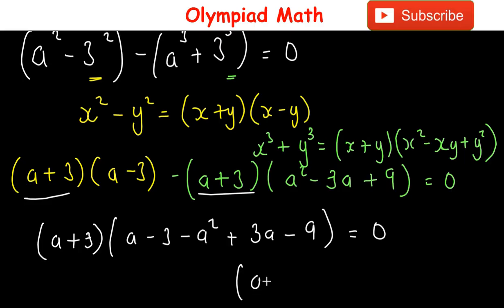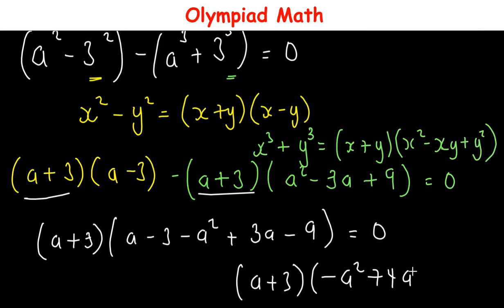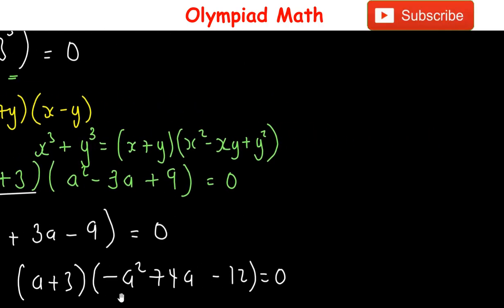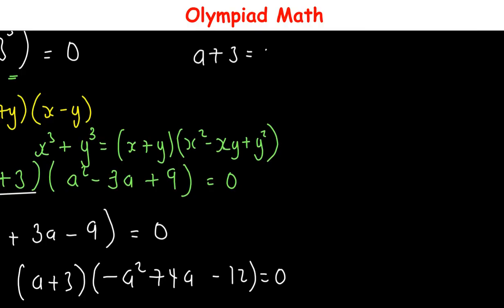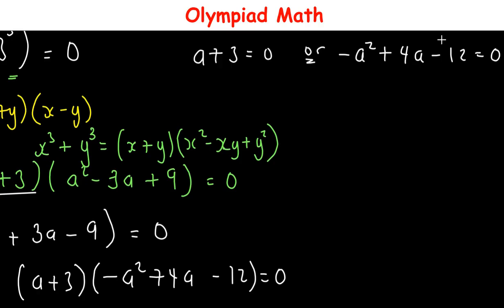Simplifying inside the bracket: a - 3 - a² + 3a - 9 = -a² + 4a - 12. So we have (a+3)(-a² + 4a - 12) = 0.